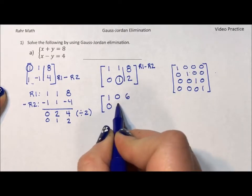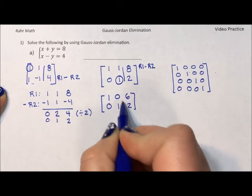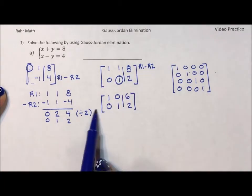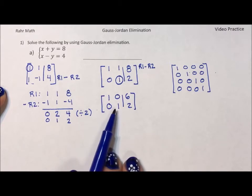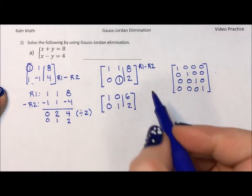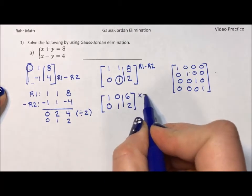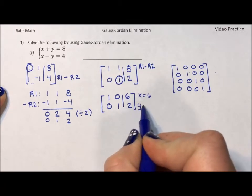And then I rewrite my 0, 1, 2. With my augmented matrix notation, you see that to the left of the line, I have my identity matrix. This translates to x equals six, y equals two.